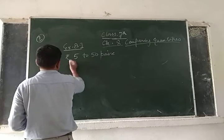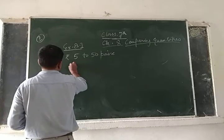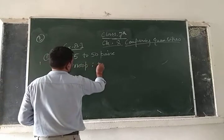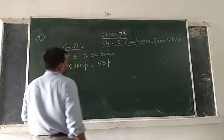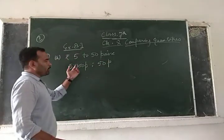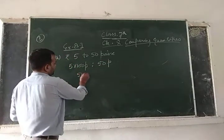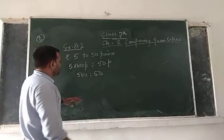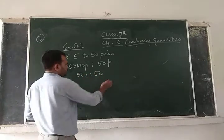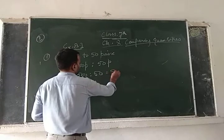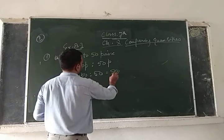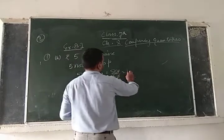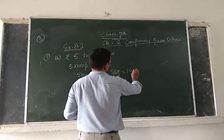So rupees — 5 into 100, this gives us 500 paise. Now 500 to 50. We divide, and we get 10 is to 1.